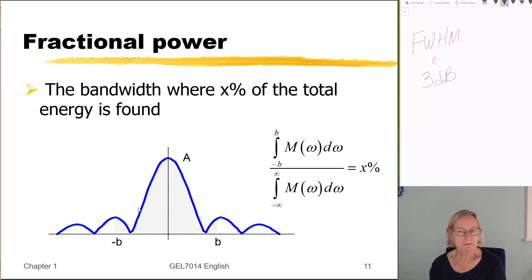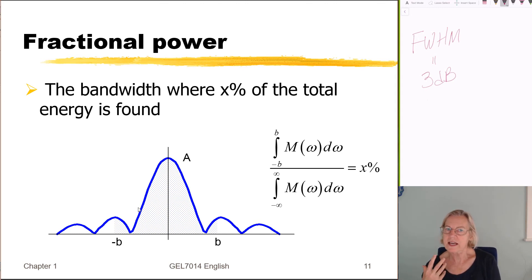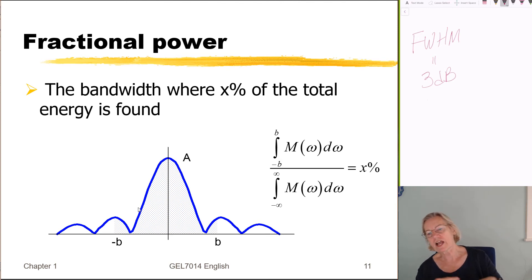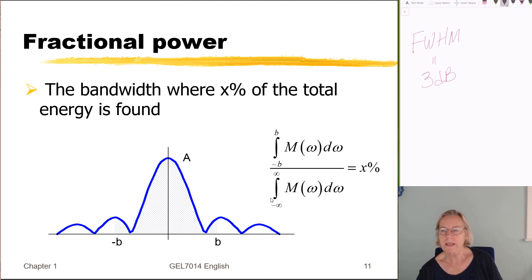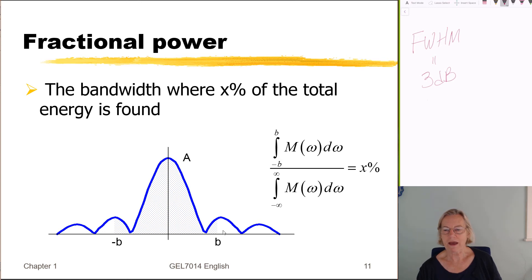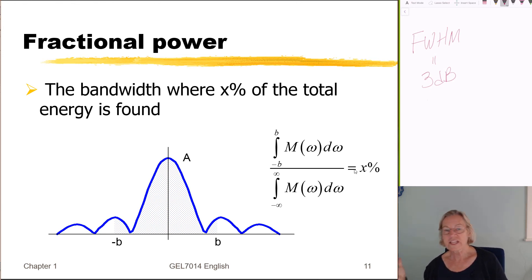Another popular definition is the fractional power bandwidth, directly related to the energy spectral density. The total energy is the area under the ESD from minus infinity to infinity. Then, integrating from −B to B, I vary B until a certain percentage of the total energy is captured within that band. For example, to find the 90% fractional power bandwidth, I vary B until that percentage is achieved.